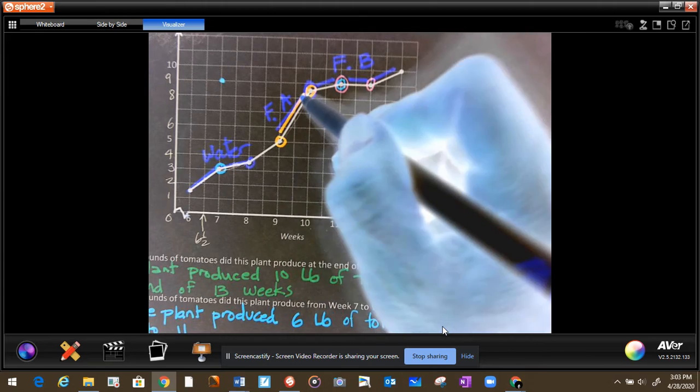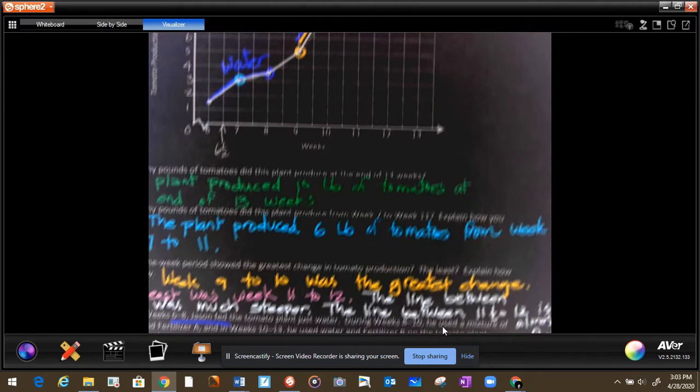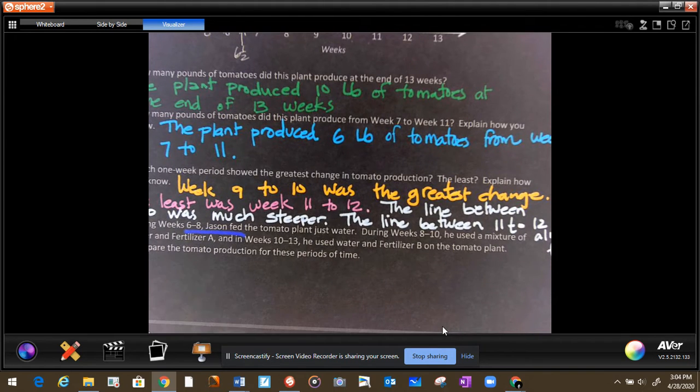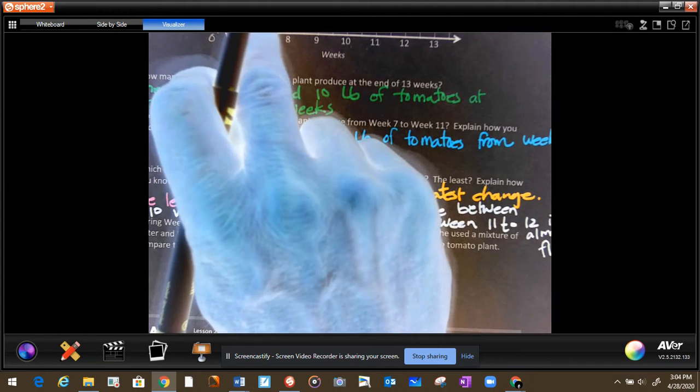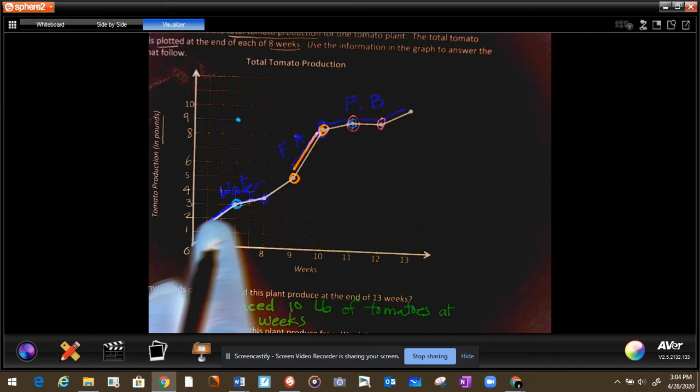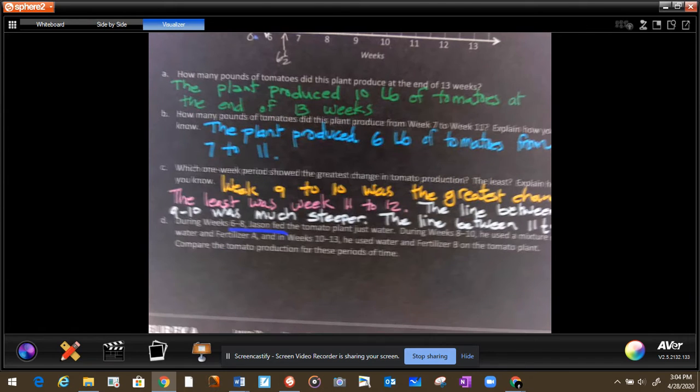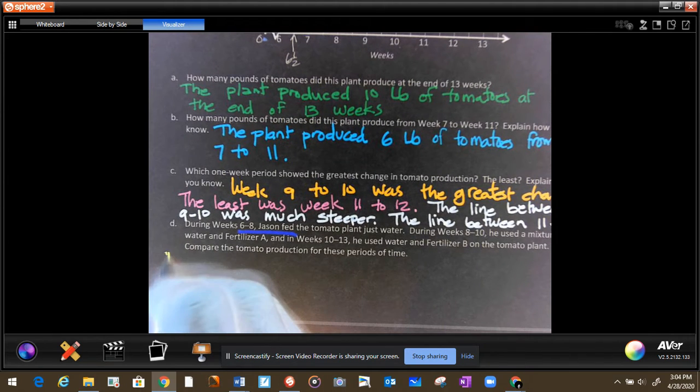Those are the results. So let's see what the question is. The question is, compare the tomato production for these periods. Alright. So if we compare the tomato productions, let's make a conclusion that the water helped. So let's write them. So let's talk about the water first. The water segment, it grew, right? Can you see it? Yes.